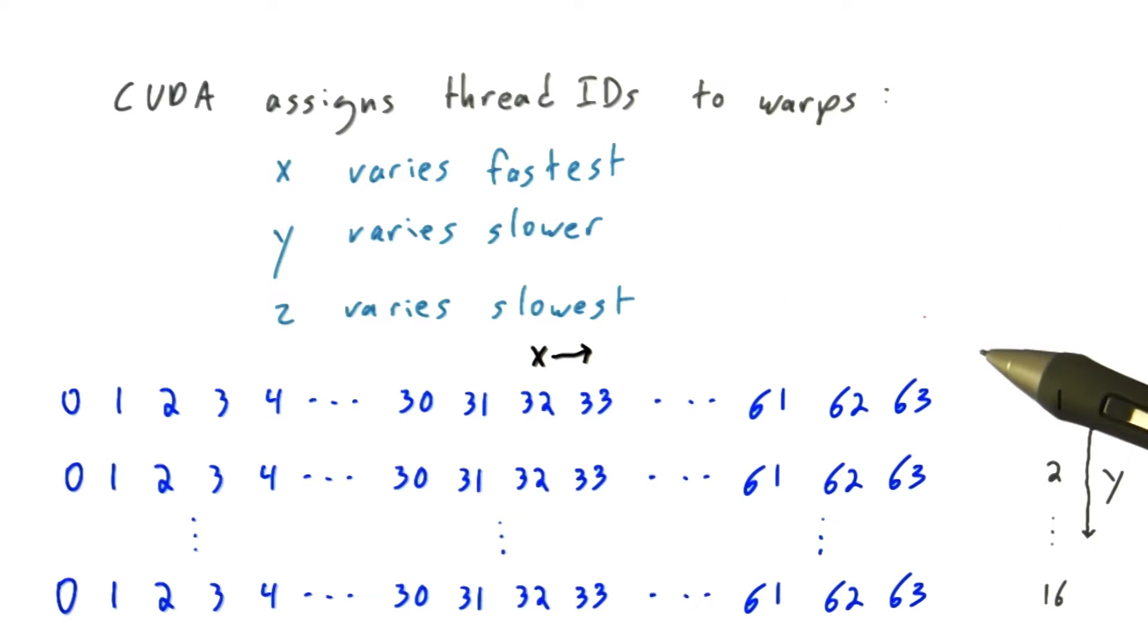And this is much more clear if I use a concrete example. So in my quiz question I have a 64 by 16 thread block.